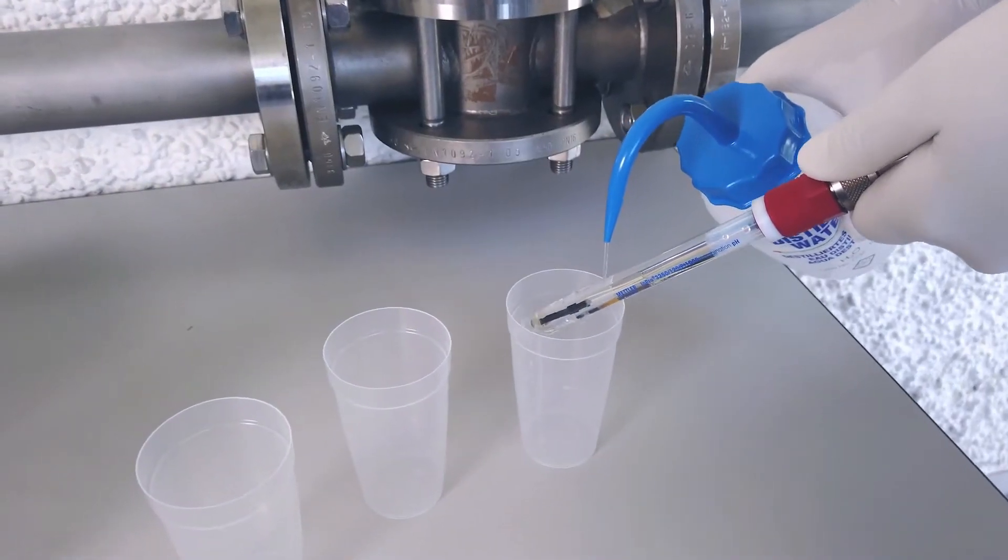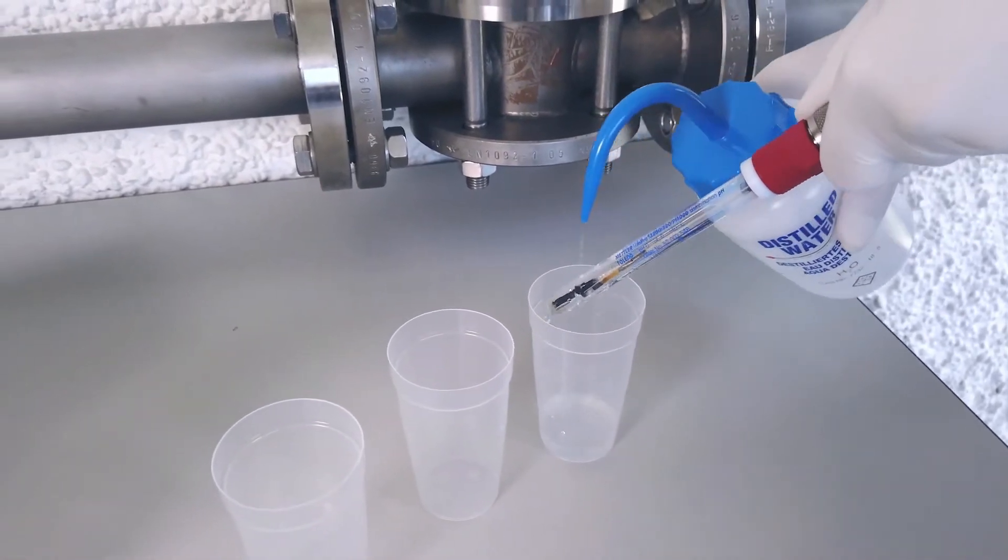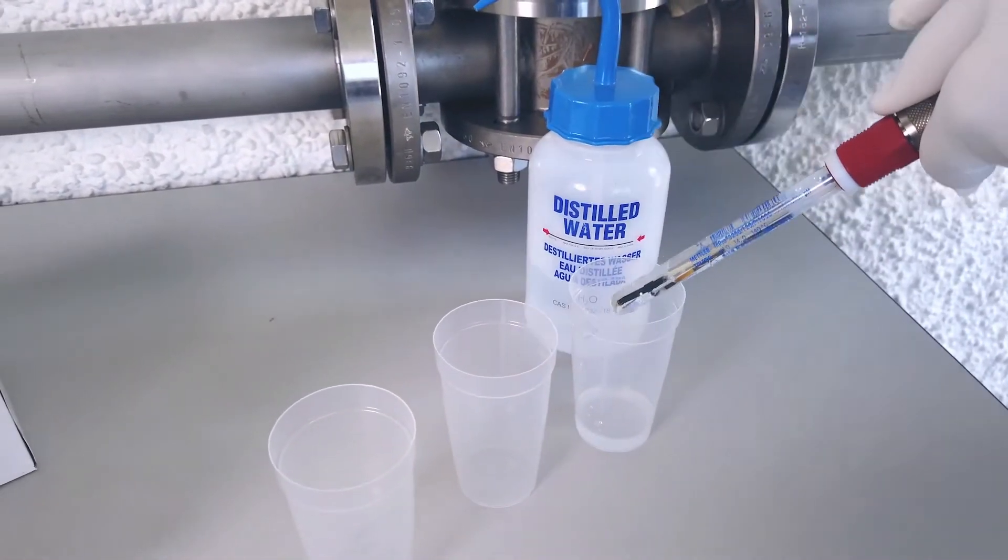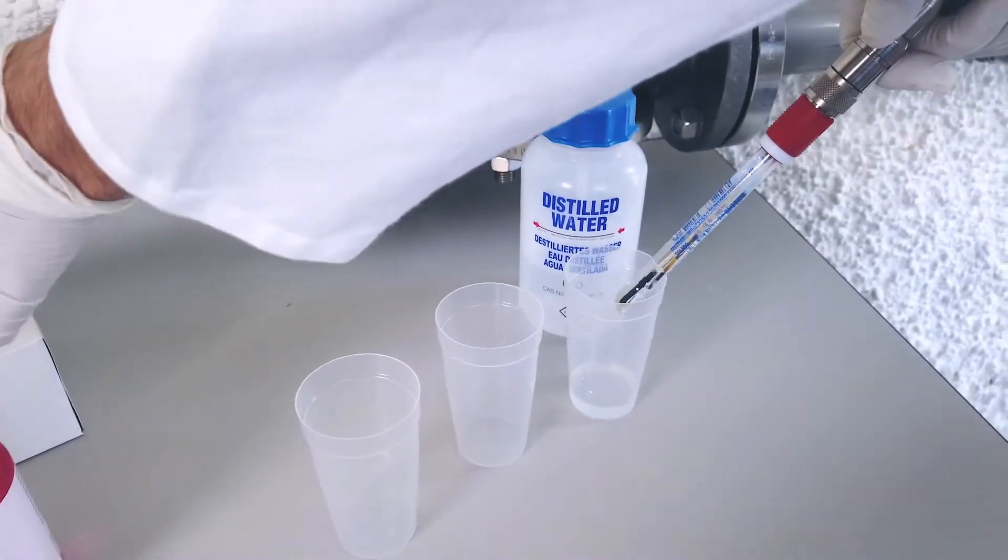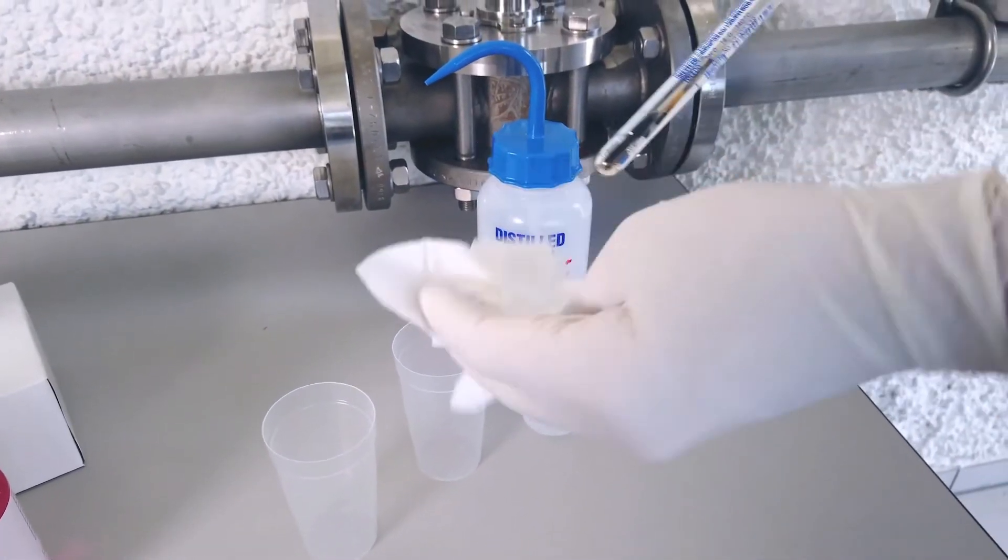Before you start to calibrate, you need to rinse the sensor with distilled water in order to remove any possible contamination, then dry it. Don't rub the sensor, but gently pat it dry. Rubbing can induce an electrostatic charge which can affect the measurement.